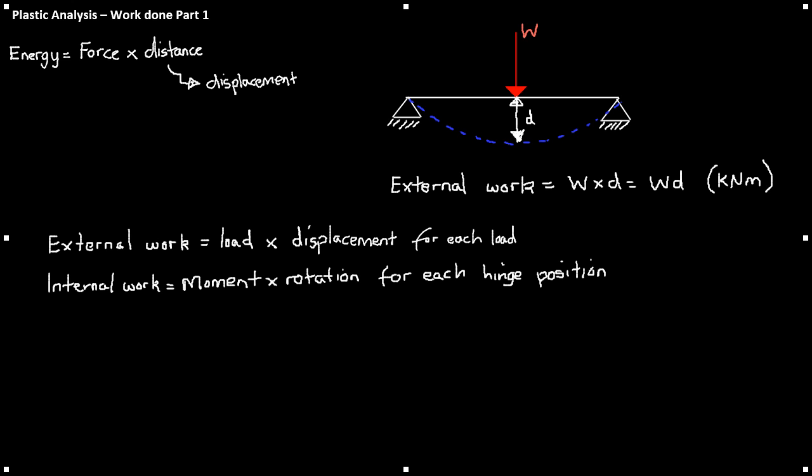The external work is the work that is applied to the beam. The internal work is the resistance by the beam to the external work being applied.